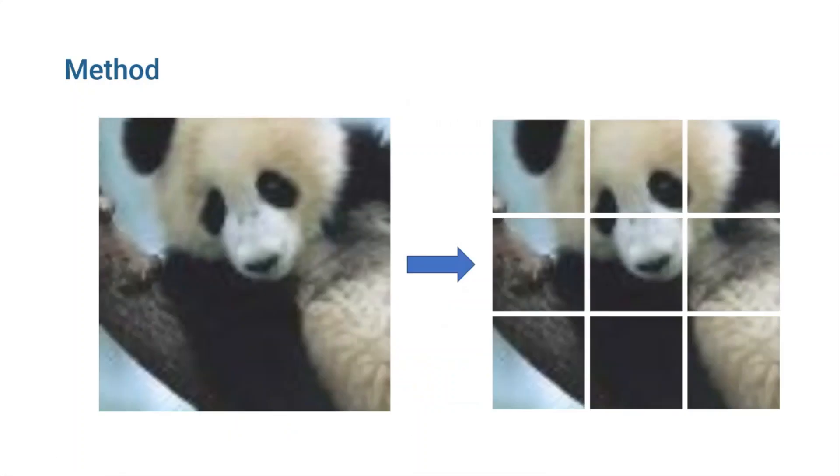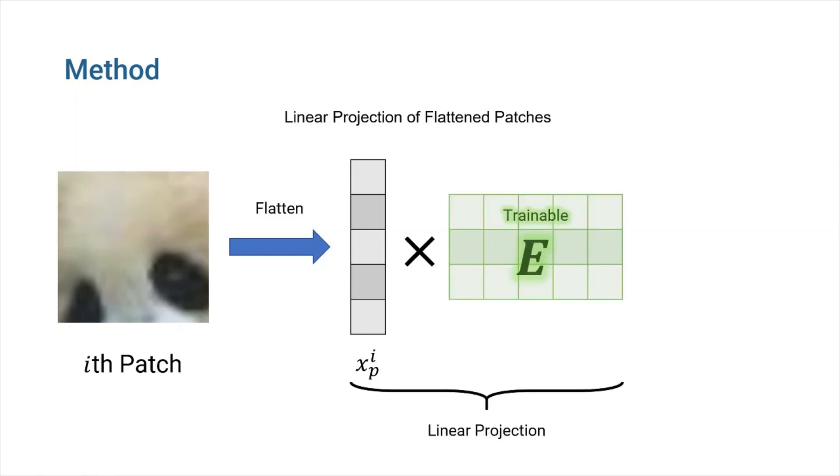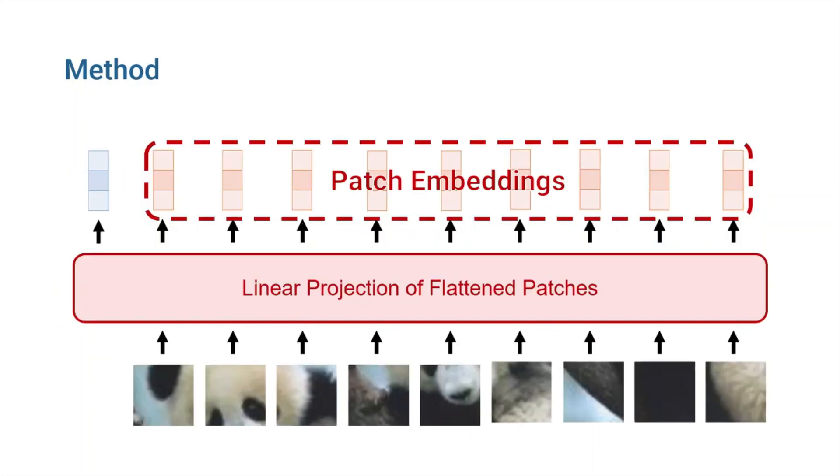In this model, we first split each image into fixed size patches. We then take each patch, flatten it into a vector, and then use a trainable matrix E to transform flattened image linearly, resulting in a new vector that we call patch embedding. Along with patch embeddings, we also create a new trainable class token. This token works just like the CLS token in BERT. It can be used to classify the image.